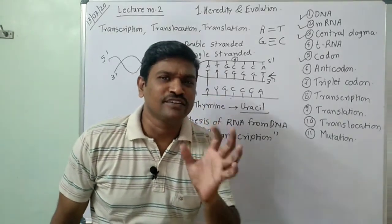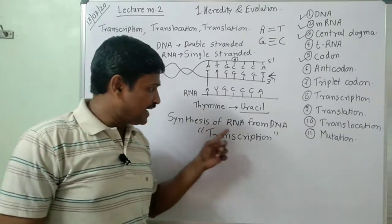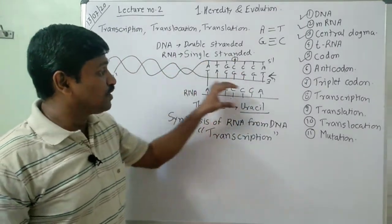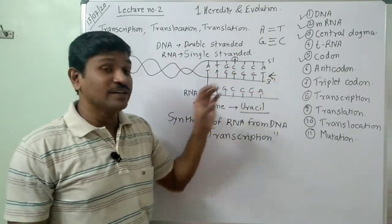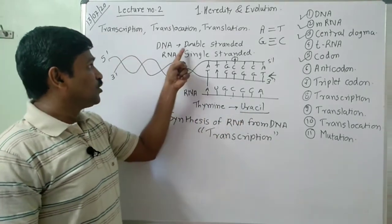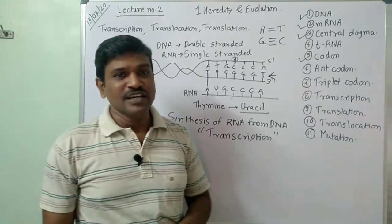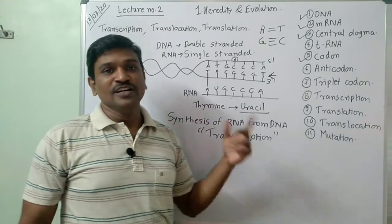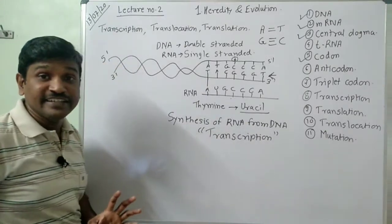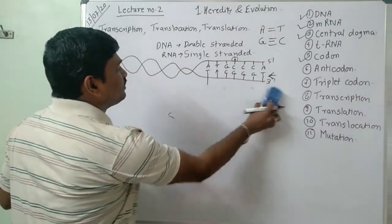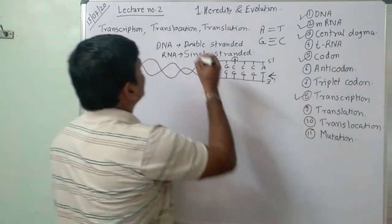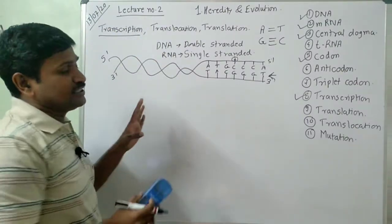So, formation or synthesis of RNA from DNA is known as transcription. I hope you understand: DNA makes RNA using one strand as a template; instead of thymine there is uracil, and instead of deoxyribose sugar there is ribose sugar. That is the difference between DNA and RNA, and that synthesis process is called transcription.